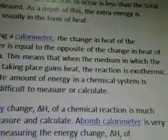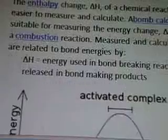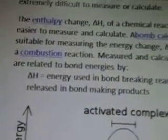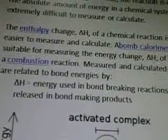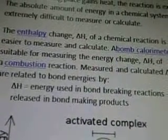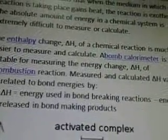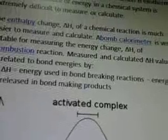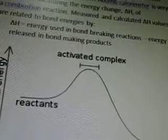The absolute amounts of energy in a chemical system are extremely difficult to measure or calculate. The enthalpy change H of a chemical reaction is much easier to measure and calculate. A bomb calorimeter is very suitable for measuring the energy change H of a combustion reaction. Measured and calculated H values are related to the bond energy used in bond-breaking reactions and energy released in bond-making products.